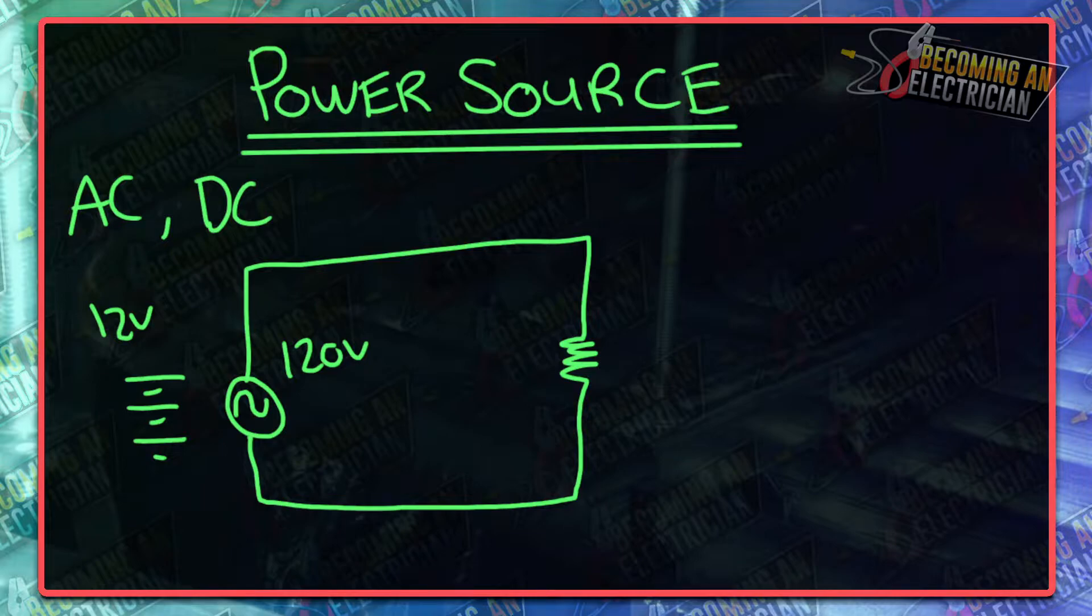So a power source is what provides the circuit actually power. Now we have power in here and then this is what's called a load. A load is something that is consuming power. A power source is providing the circuit power.